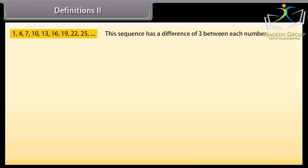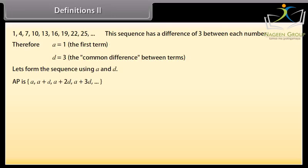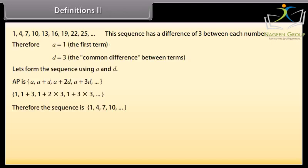Look at this example. We can see that this sequence has a difference of 3 between each number. Therefore, A is equal to 1, the first term, and D is equal to 3, the common difference. We know AP is equal to A, A plus D, A plus 2D, A plus 3D, and so on. Substituting the values of A and D we get 1, 1 plus 3, 1 plus 2 into 3, 1 plus 3 into 3, and so on, which gives the sequence 1, 4, 7, 10, and so on.